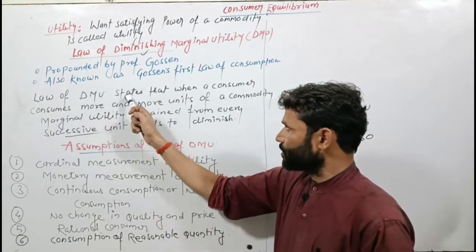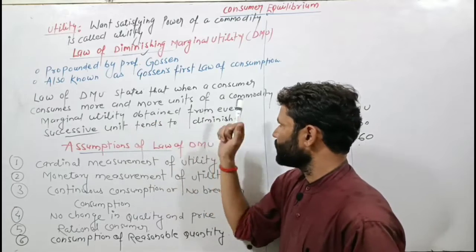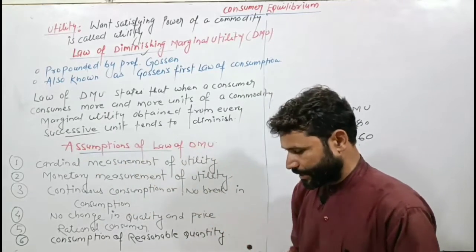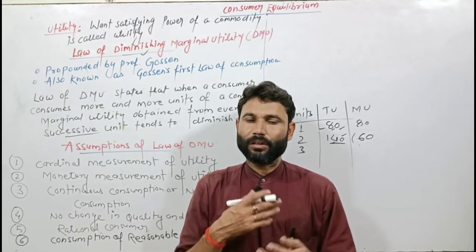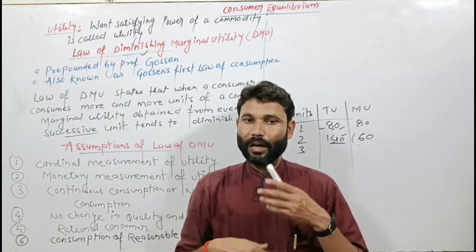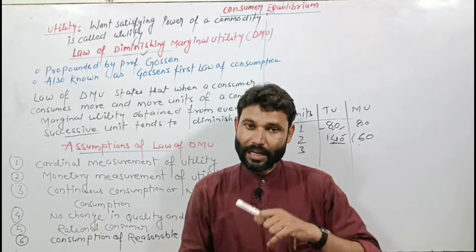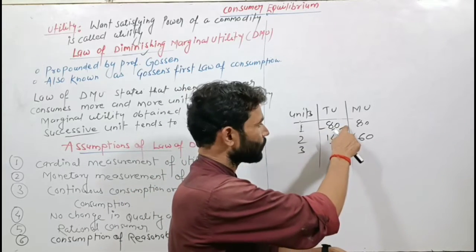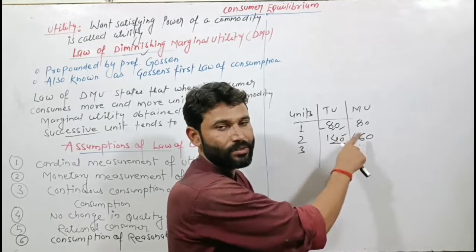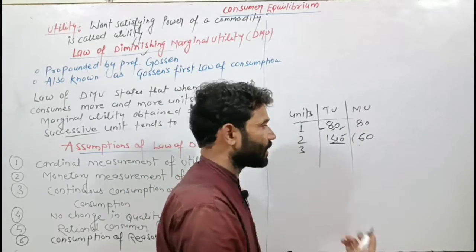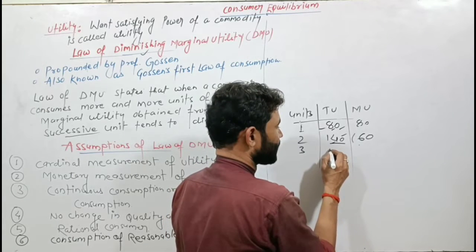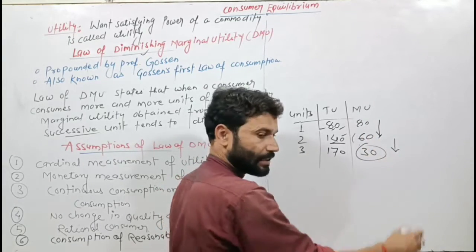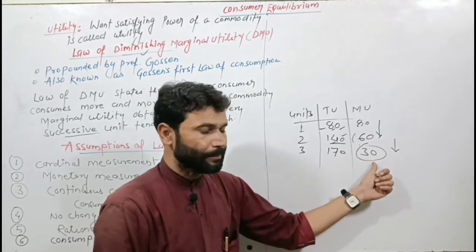The definition: The Law of DMU states that when a consumer consumes more and more units of a commodity, the marginal utility obtained from every successive unit tends to diminish. Each next unit gives less satisfaction than the previous unit. For example, the first unit gave 80 utils, the second gave 60 utils, and the third might give 30 utils — always decreasing.